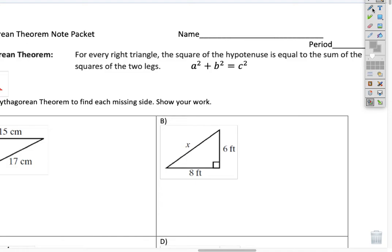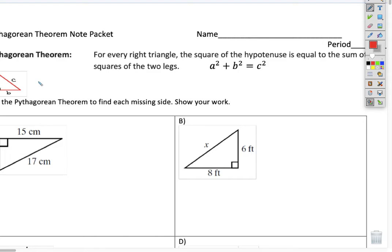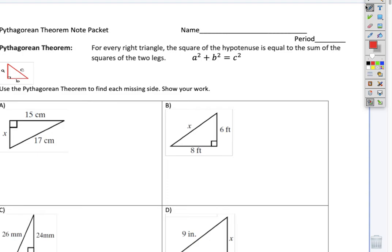First off, at the top of your notes sheet here is the actual formula. Okay, so you see the little diagram here with the a, b, and the c off to the left, and then the formula with the a squared plus b squared equals c squared. All right, the example that I want to start with is actually example b.